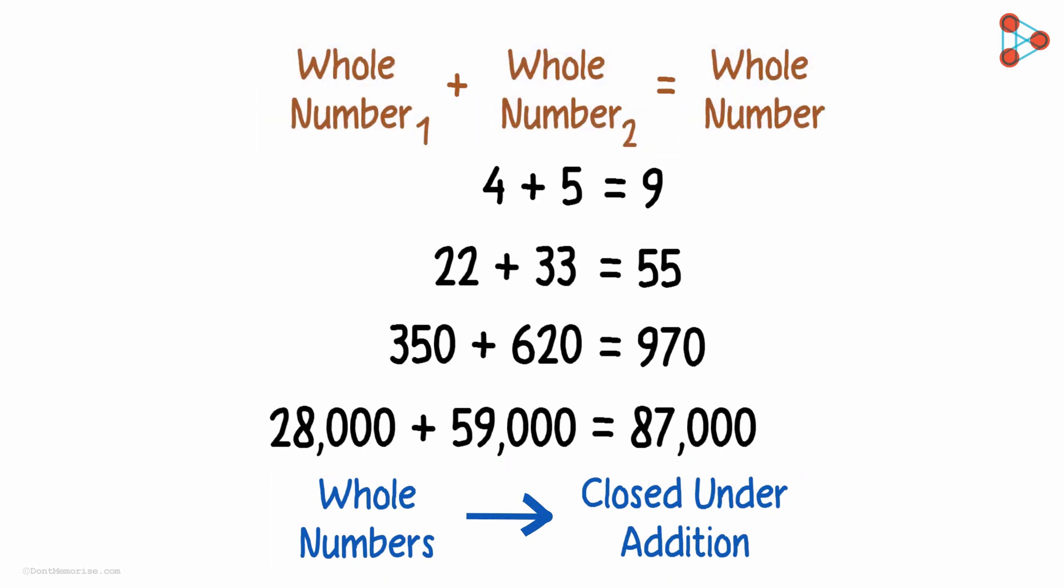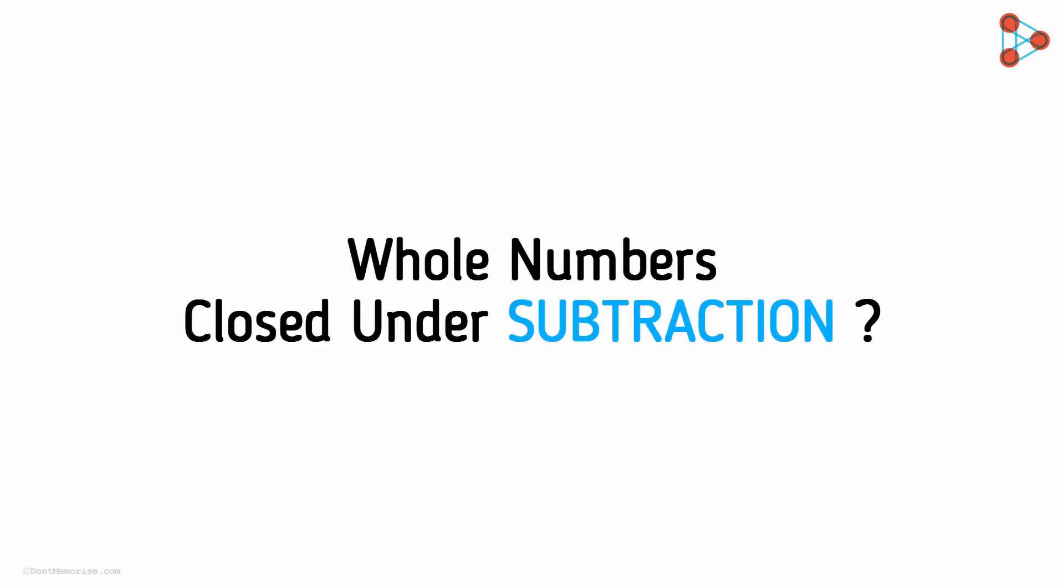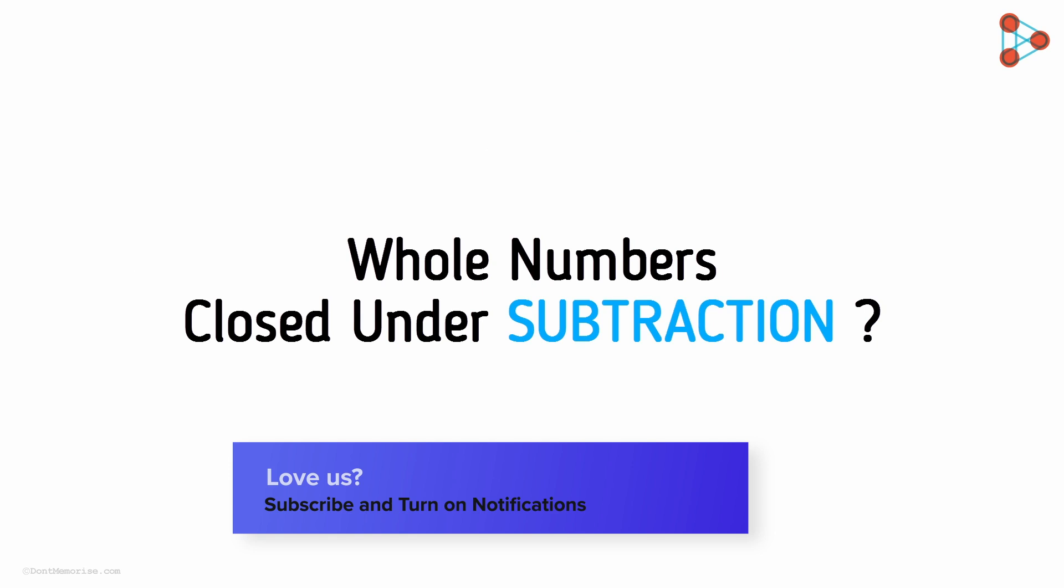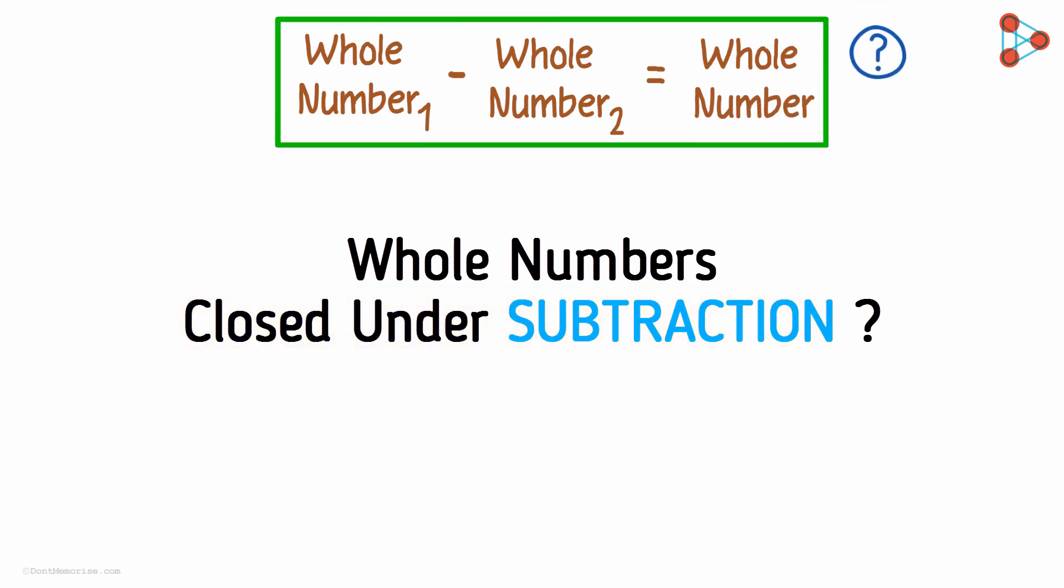Now here is a question for you to answer. Are whole numbers closed under subtraction? Pause the video and give it a thought. First of all, let's understand what the question means. What do we mean by closed under subtraction? It means that if we take any two whole numbers and subtract them, then we will always get whole number. Will this always happen? Let's try to find this out by subtracting any two random whole numbers.